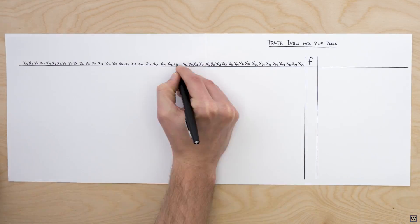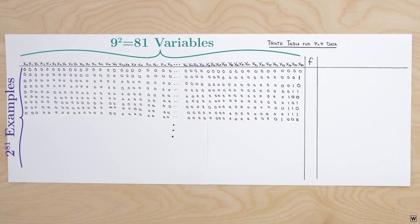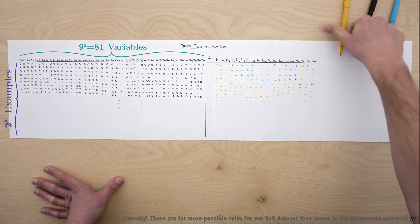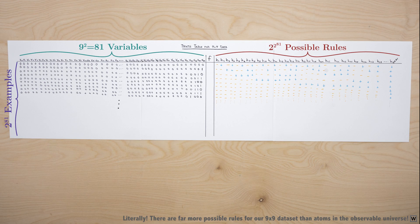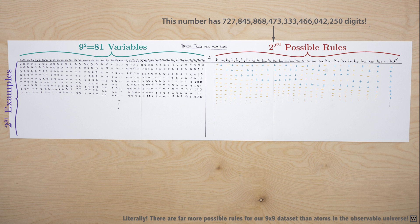To have one rule match each possible data set, we need an absolutely astronomical number of rules. Again guaranteeing that the rule we end up choosing will simply get lucky and fail to generalize, exactly as we saw on our toy data set.